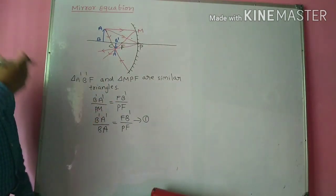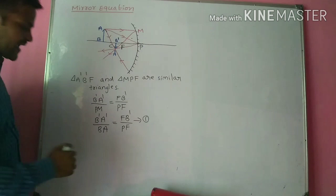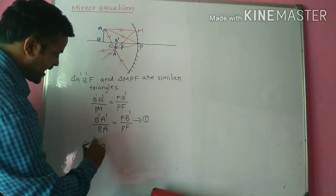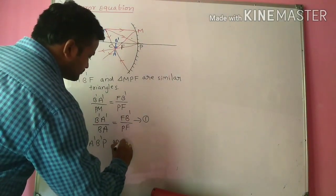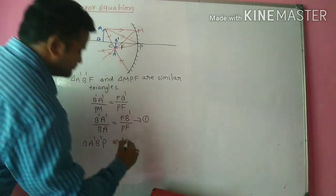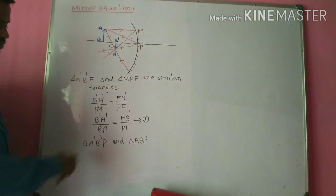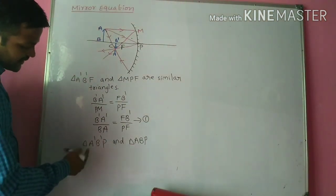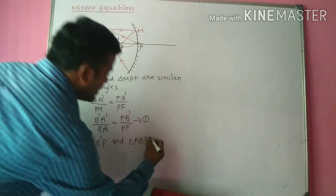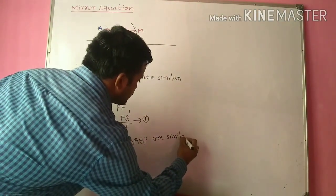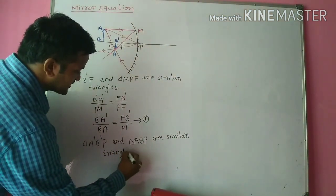Now let us consider another set of similar triangles: triangle A'B'P and triangle ABP. These two are also similar triangles. Applying the same rule — ratio of sides equals ratio of bases — for triangle A'B'P the side is B'A', and for triangle ABP the similar side gives: B'A' / BA = PB' / PB. This is Equation 2.